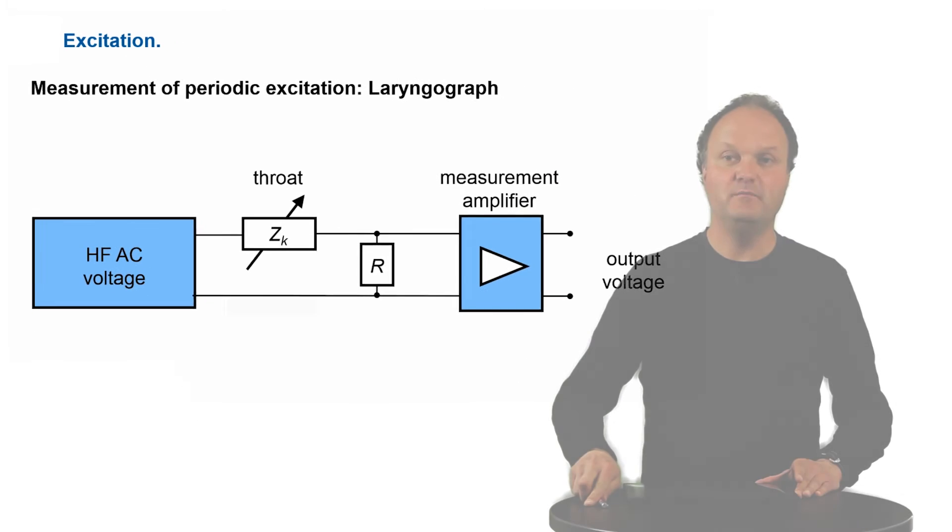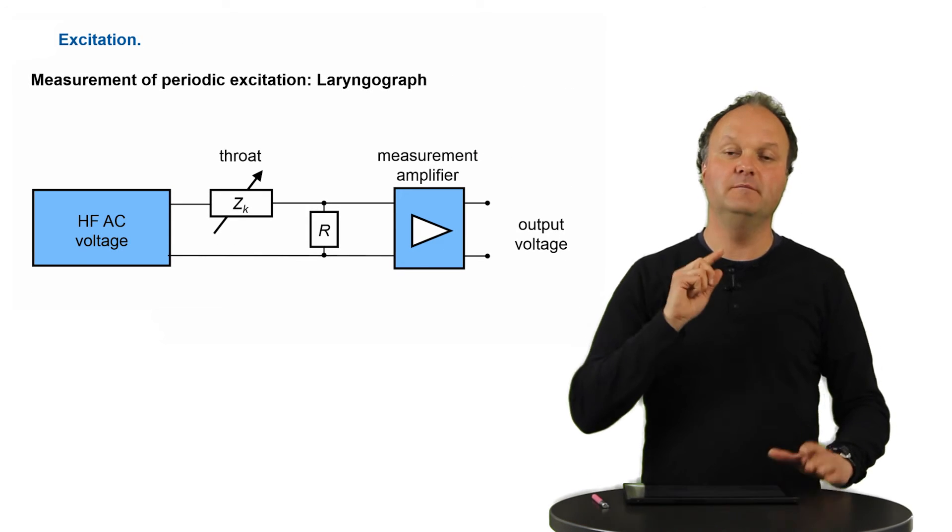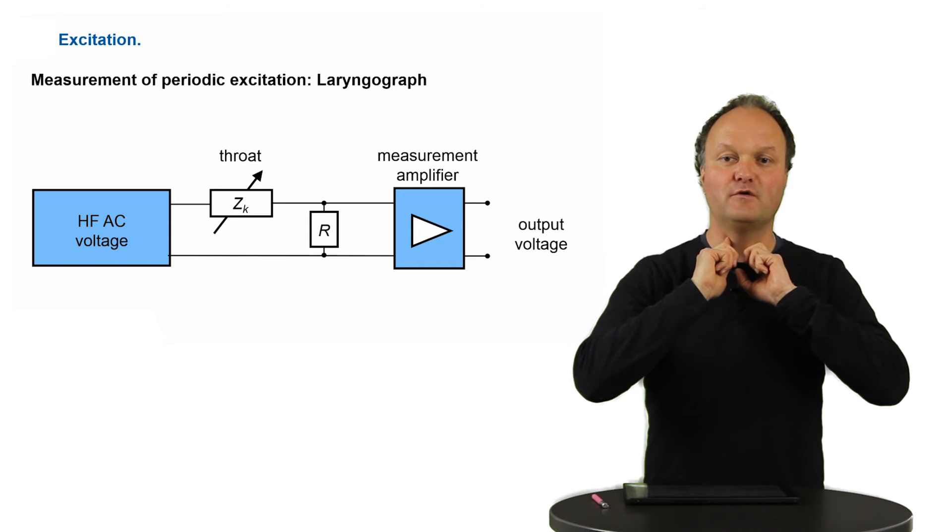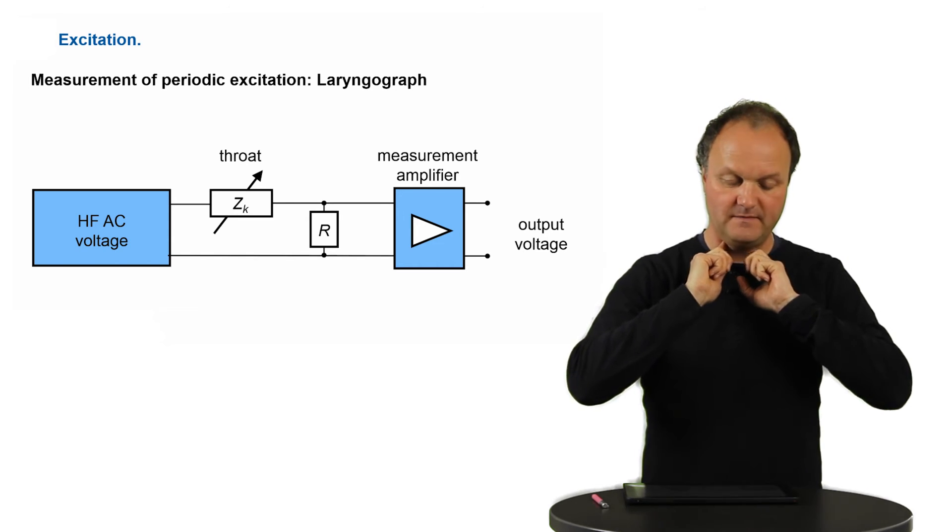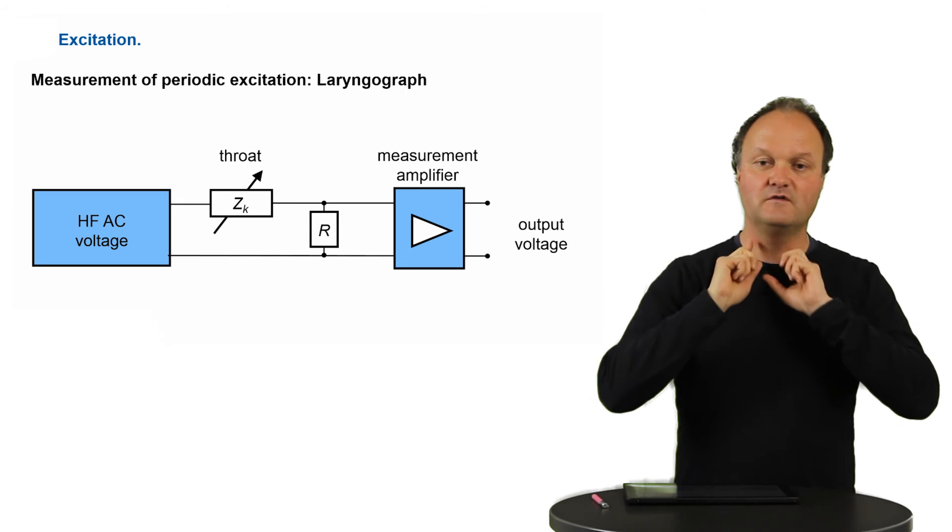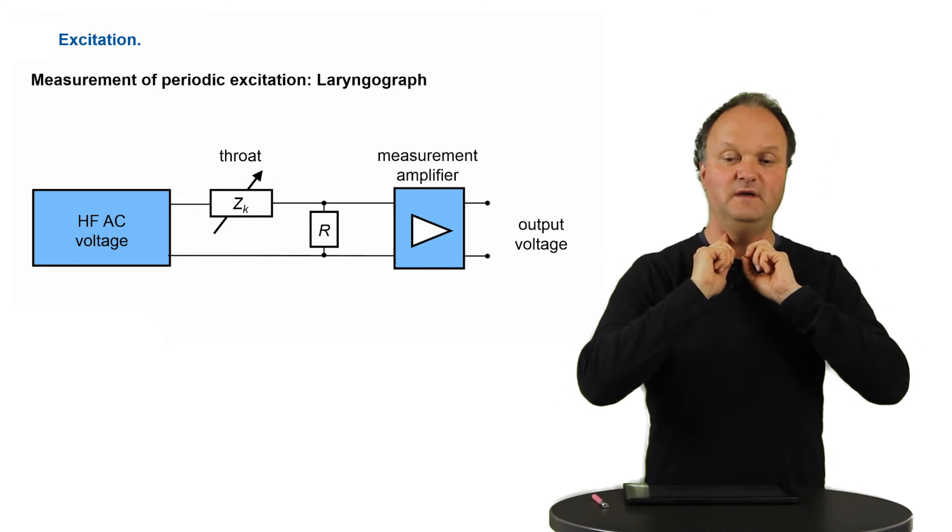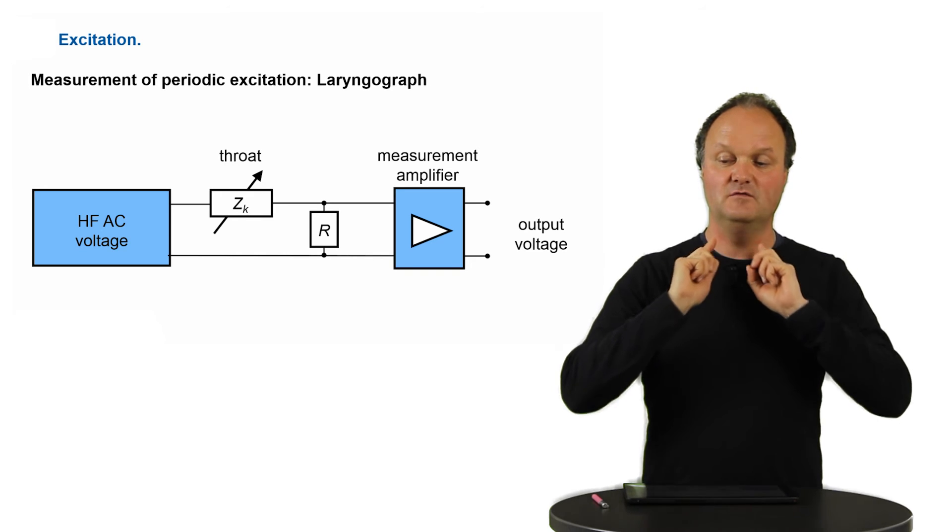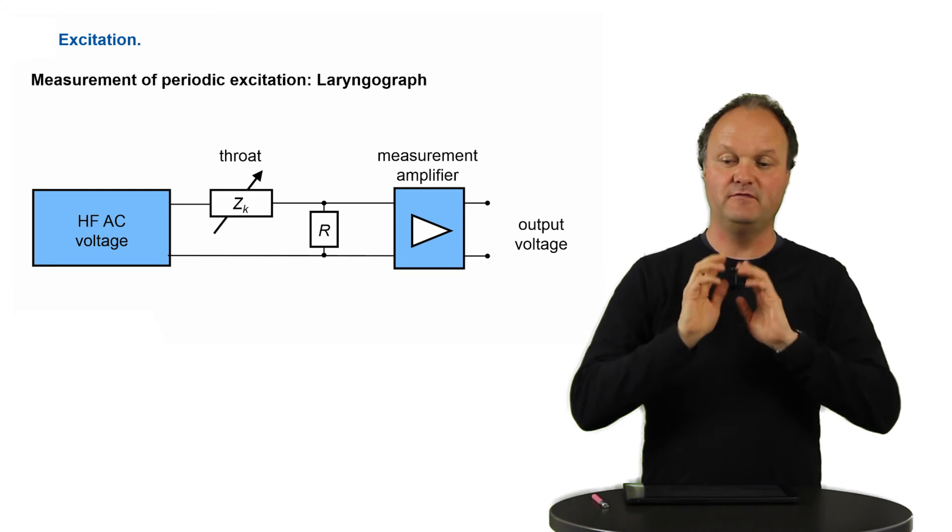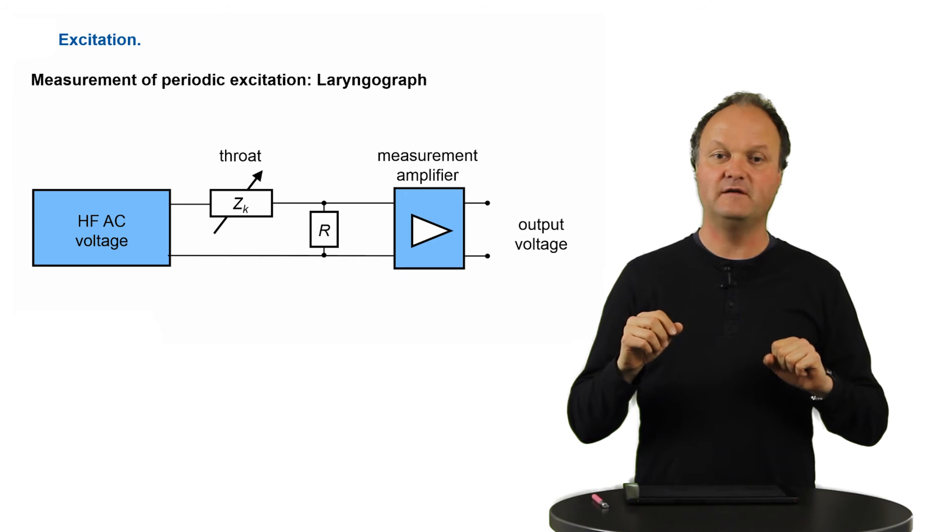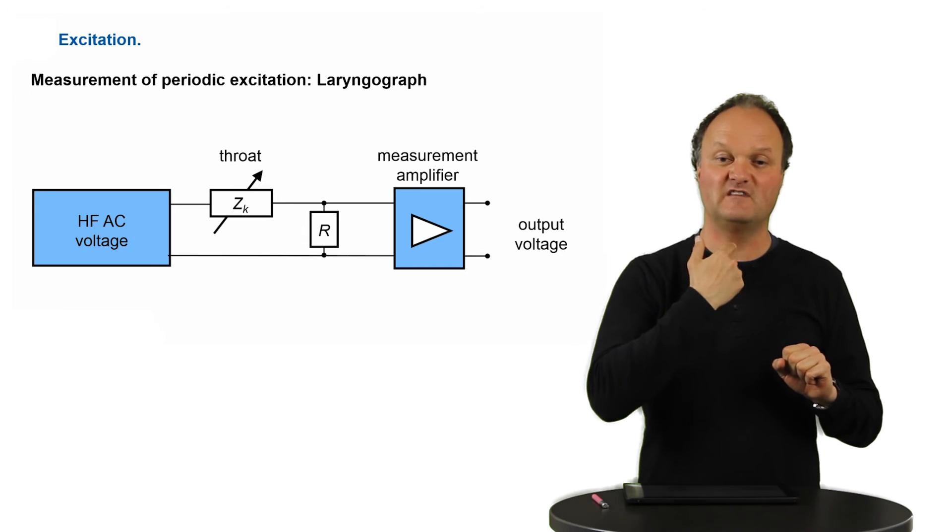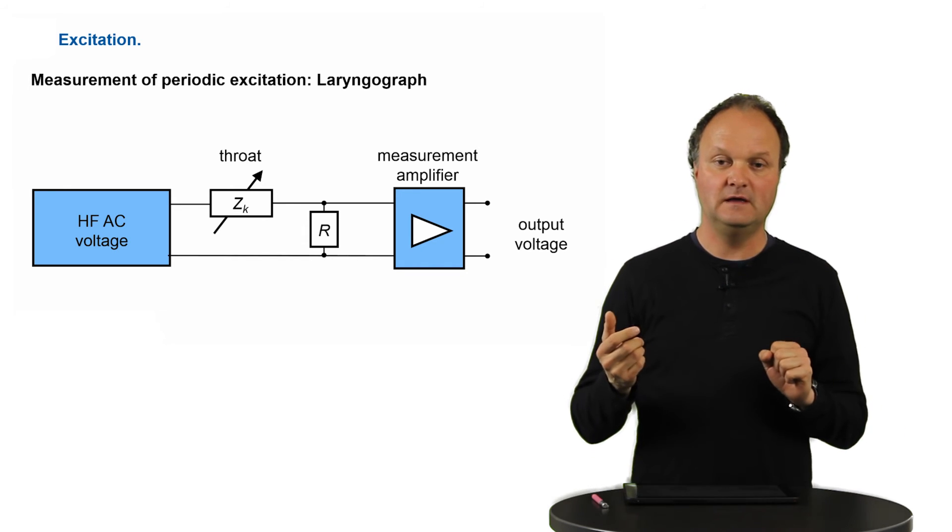We can try to measure the fundamental frequency by putting electrodes on both sides of the larynx. And the electrodes can then measure the resistance or the complex resistance or impedance between these two electrodes. If the vocal folds are open, we will have a relatively high resistance because there is air, which is a good isolator in between.